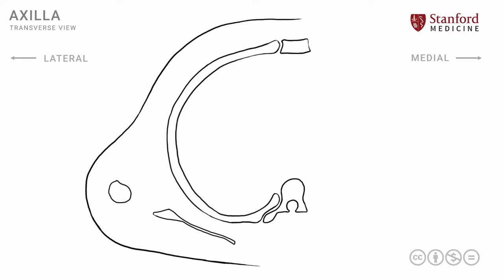I will now represent this with a simple line drawing and put on the structures in order to understand the boundaries and contents of the axilla. We are looking at the right side from the foot end. This is the midline, with medial and lateral as shown on screen. The first structure we can mark is the rib, running its entire length from the posterior part where the vertebra is to the anterior part where the sternum is. The second important structure is the humerus, cut in transverse section, showing a section of the shaft. There is also the scapula, a flat bone also cut in transverse section. This whole area is covered by skin.